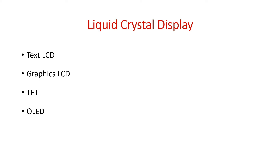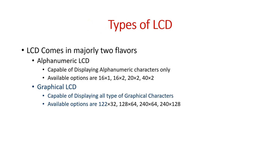Text LCDs come in a variety of sizes. The main options are 16 by 1, 16 by 2, 20 by 2, and 40 by 2 — meaning 16 characters per row with one or two rows respectively. There are also 8 by 1, 8 by 2, 8 by 4, 40 by 2, and 40 by 4 displays available. The most popular one used with Arduino is the 16 by 2 LCD. Among graphics displays, the 128 by 64 is the most commonly used.